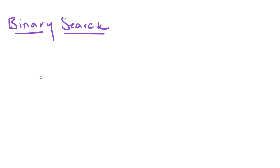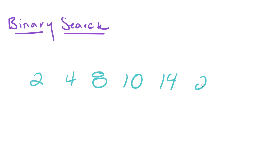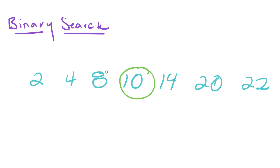Let's use the numbers 2, 4, 8, 10, 14, 20, and 22. How this is going to work is we find the middle number of the array — in this case, that's 10. Our target is going to be 22, the worst case scenario.